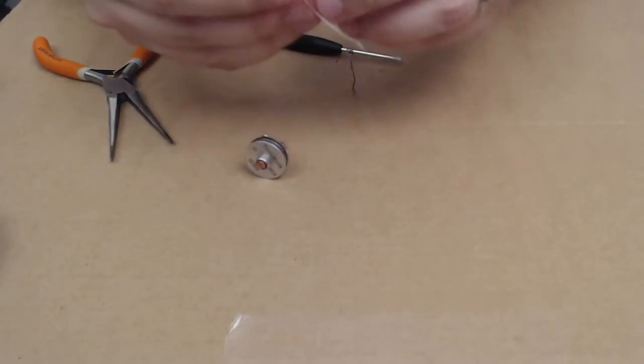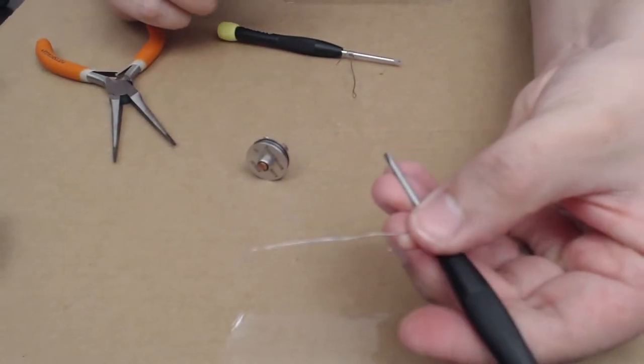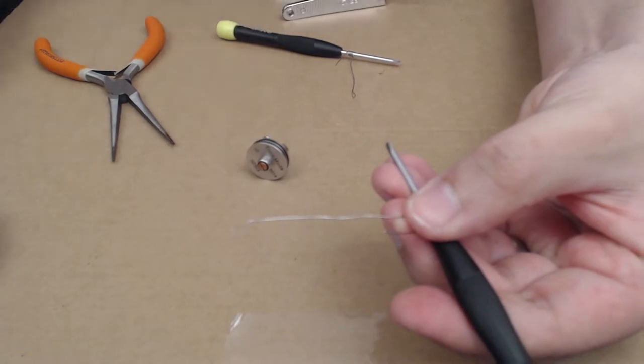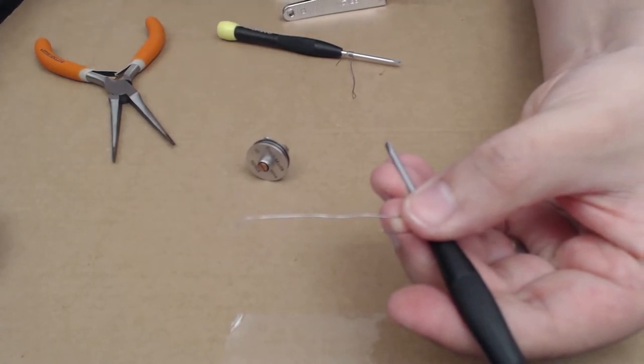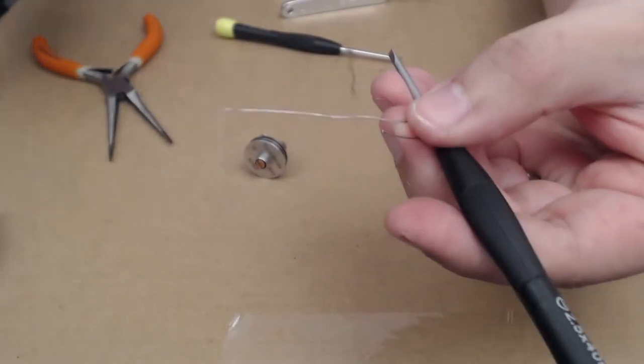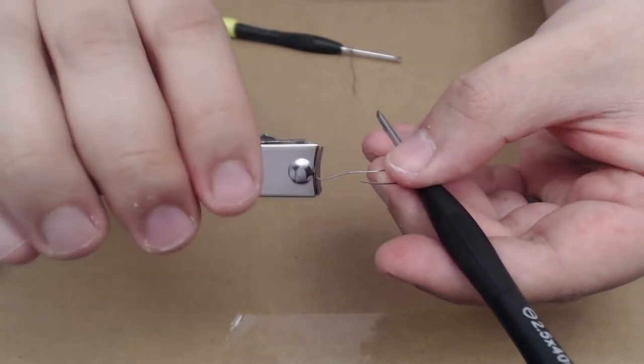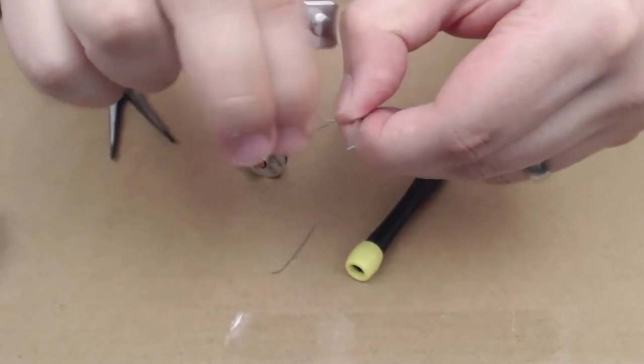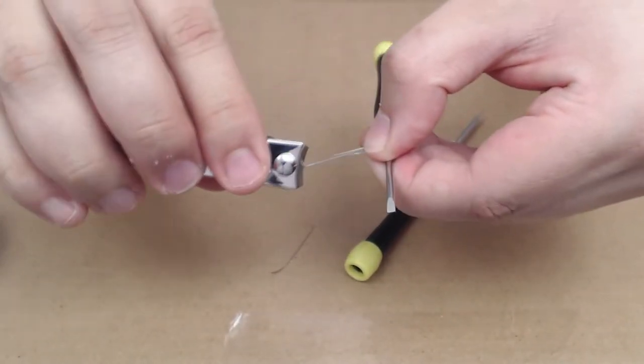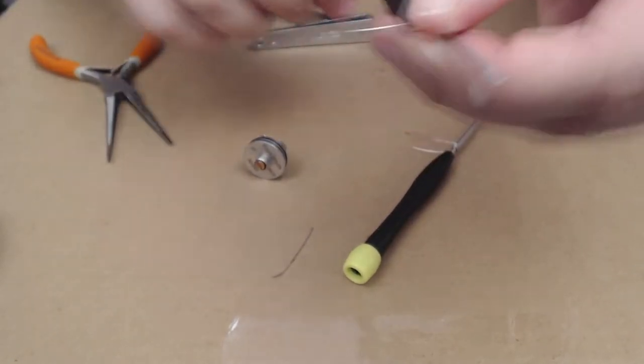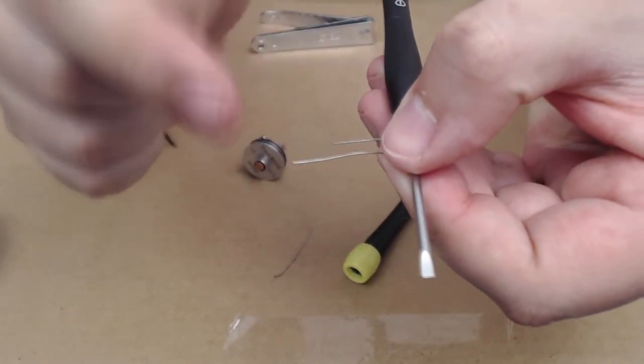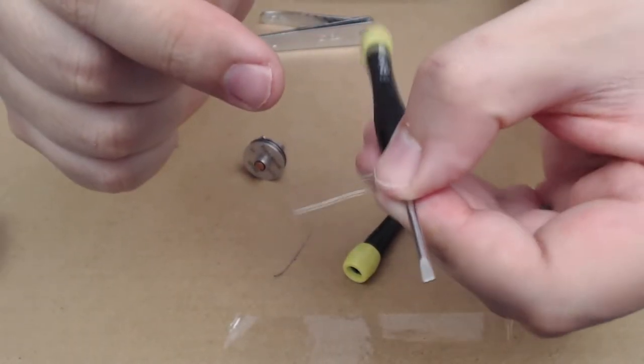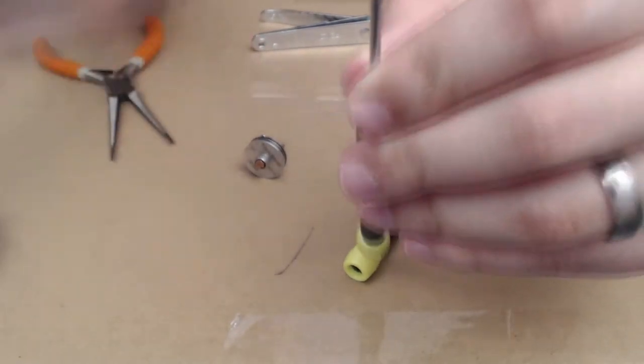Alright, so now you have two identical setups on these two screwdrivers. So what we're going to do is obviously we don't need that much of a lead right there, so we will just trim off that. This side, same thing. You don't need that much of a lead. You do want to have one lead longer than the other because one is going to go into your positive, one is going to go into your negative.